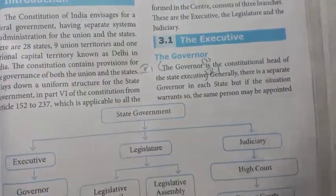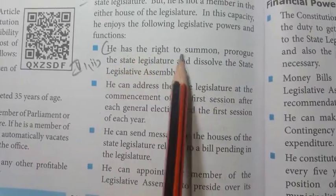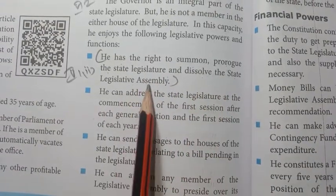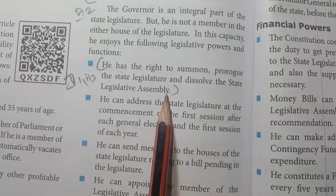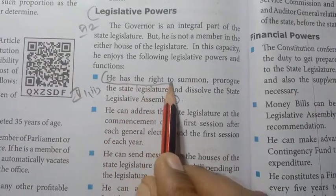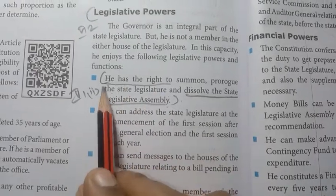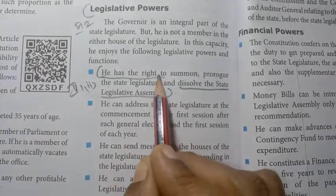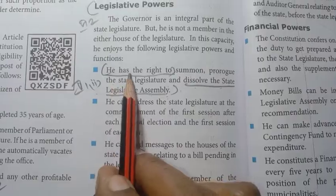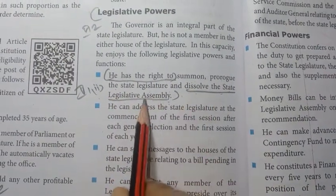Page number 260, under legislative powers: he has the right to summon and prorogue the state legislature and dissolve the state legislative assembly. This is the second point.